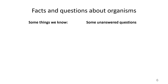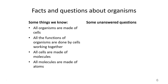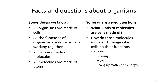At this point in the unit, there are some things we already know. For instance, all organisms are made of cells. All the functions of organisms are done by cells working together. All cells are made of molecules, and all molecules are made of atoms. There are some unanswered questions we'll need to understand going forward — like what kind of molecules are cells made of, and how do those molecules move and change when cells do their functions, such as growing, moving, and changing matter and energy. We'll be looking in particular at this one today: what kinds of molecules are cells made of?